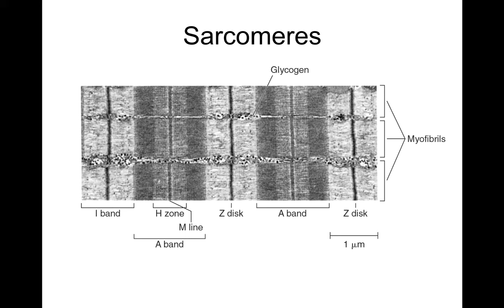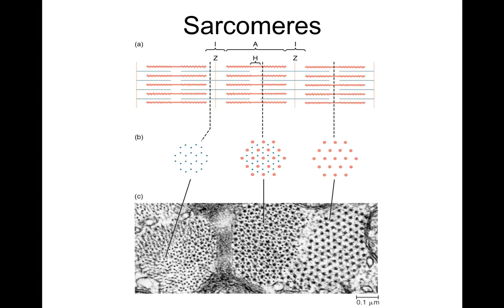Under a microscope, you can see this very characteristic Z disc, the A band, the H zone, the M line, and the I band. When researchers first began to study this, they could see that muscles in different states of contraction had some of those regions change in size — some got shorter and some stayed the same length. That led them to the sliding filament theory, which we'll talk about in just a moment.